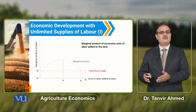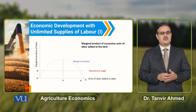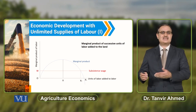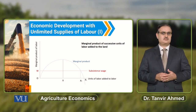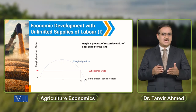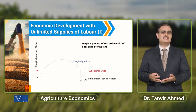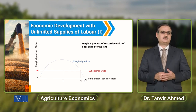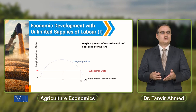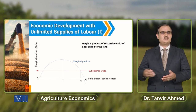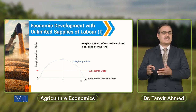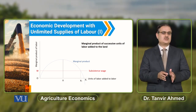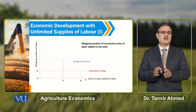Aur yeh jo aapke paas marginal product hai, it contributes less than the subsistence wage. And when marginal product of labour is less than the subsistence wage, then it indicates a surplus in labour. Agar haem yahaan pe further addition of labour up to x2 units, toh against x2 units of labour, marginal product of labour becomes zero.